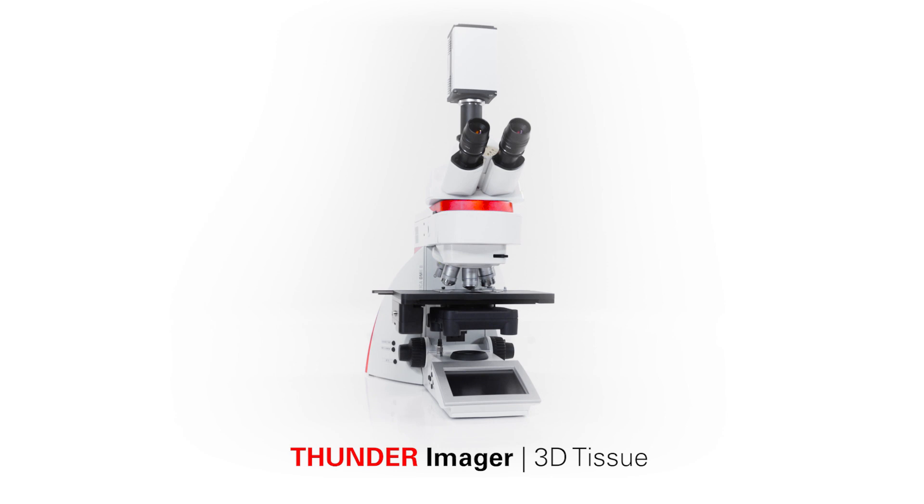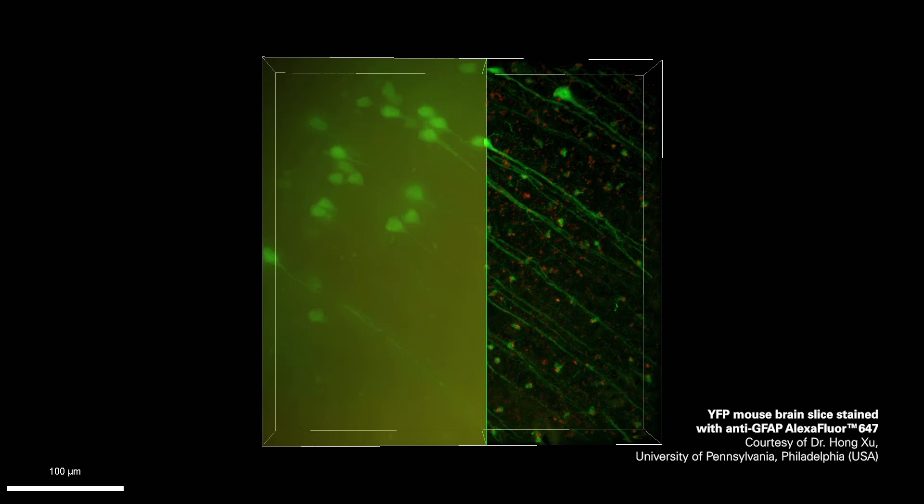The Thunder imager offers instant removal of the out-of-focus blur by computational clearing. You get crystal clear images, which enables you to follow the finest structures within these tissue sections.